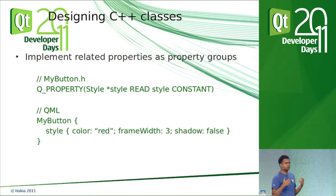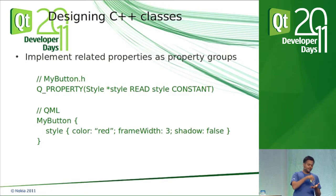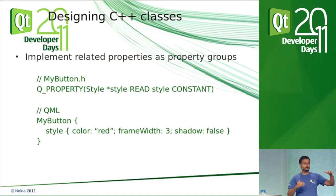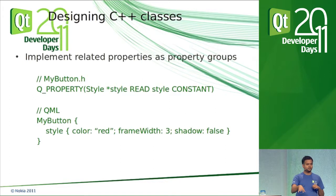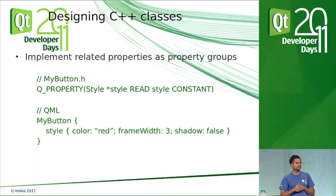QML has a nice syntax for property groups. If you look at anchors — anchors.top, anchors.bottom — anchors is really just a C++ object with properties called top, left, right, bottom. You can do this too. If MyButton has style-related properties like color, frame width, and shadow, the MyButton class can return a style object with those properties. In QML you can then use the nice syntax: style.color, style.frameWidth. Without group properties, you'd have to write style_color: red, style_frameWidth: 3 — it's just harder to use.